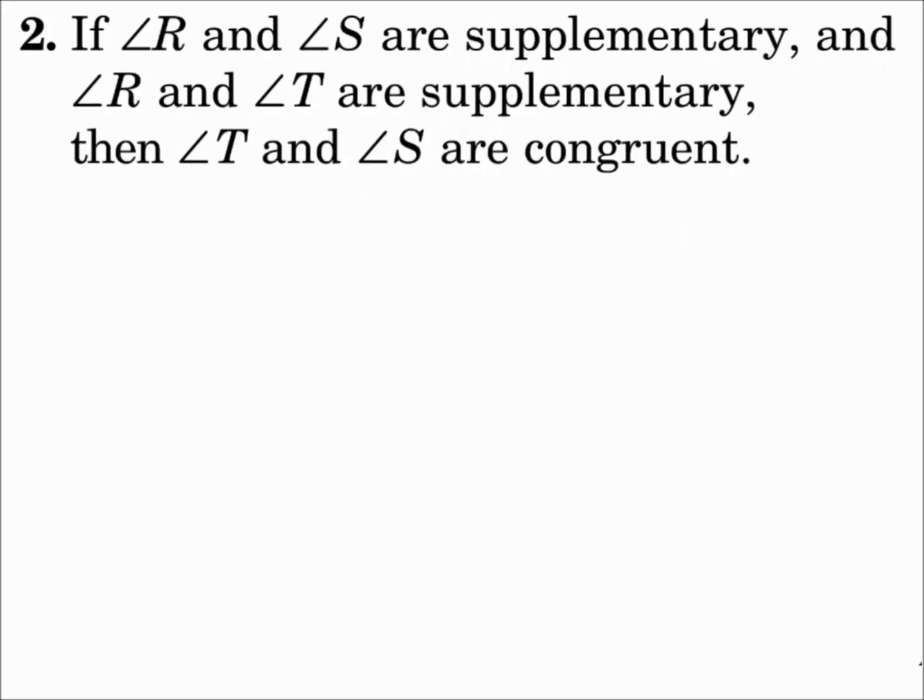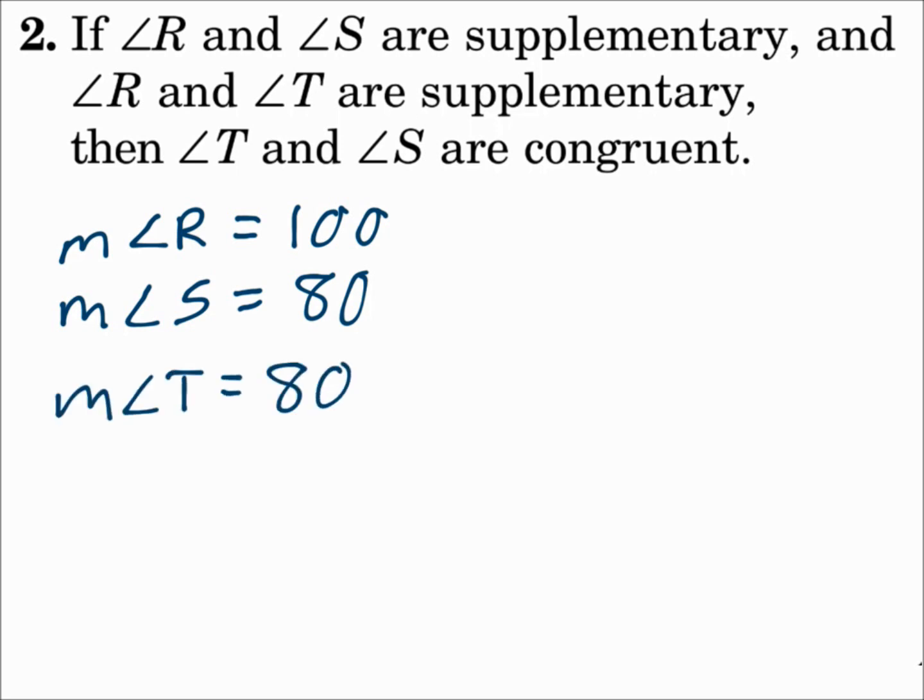Number 2: If angle R and angle S are supplementary and angle R and angle T are supplementary, then angle T and angle S are congruent. Well, supplementary angles add up to 180. So let's try an example here. If the measure of angle R is 100, then that means the measure of angle S has to be 80 since those two are supplementary. And the measure of angle T is also 80 because angle R and angle T are supplementary. So I can reason there that no matter what angle R is, since angle S and angle T have to be the part that adds up to 180, then angle S will always be congruent with angle T. This conjecture is true.